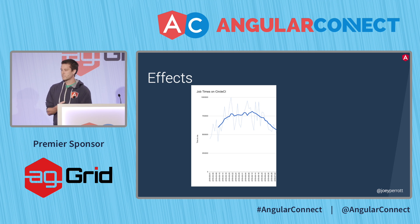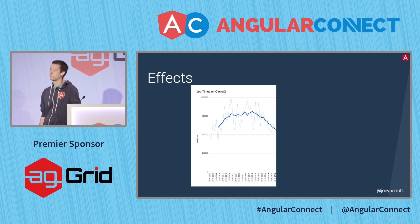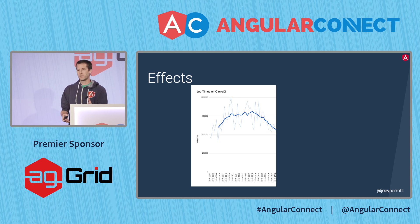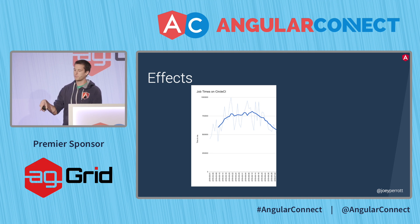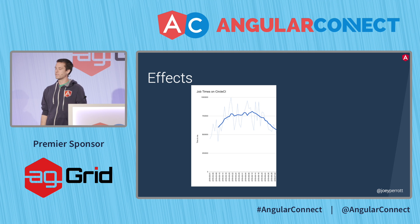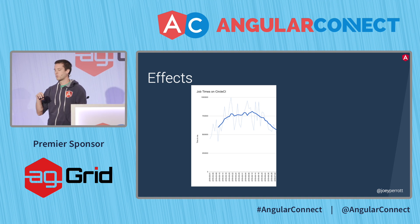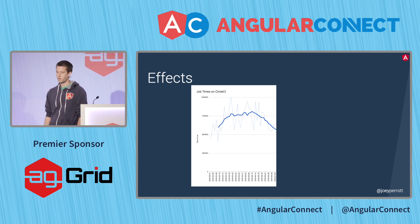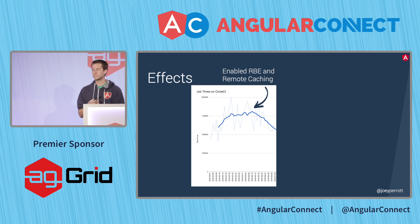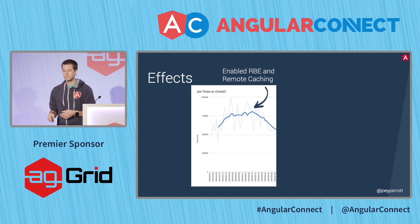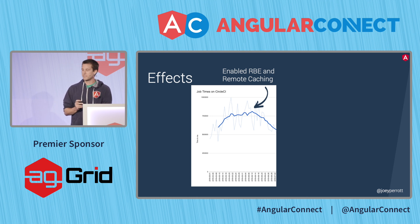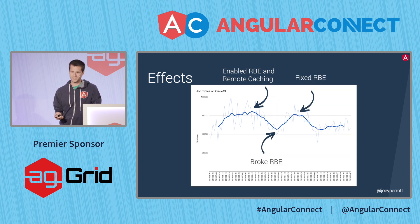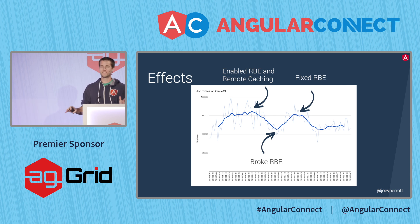Over the last few months, we set up remote build execution and remote caching for the Angular repository. We currently only take advantage of it in our CI, but we've found that for our unit tests, we're 33% faster. You can see on the graph that at the beginning, we were adding more tests and complexity and it was growing, then around this point we enabled remote build execution and caching and the graph went down. It broke, then fixed, and now it's flattening out again — so we're good.